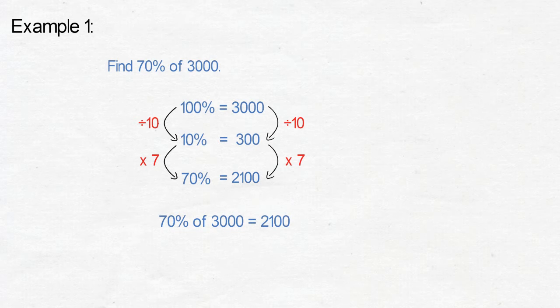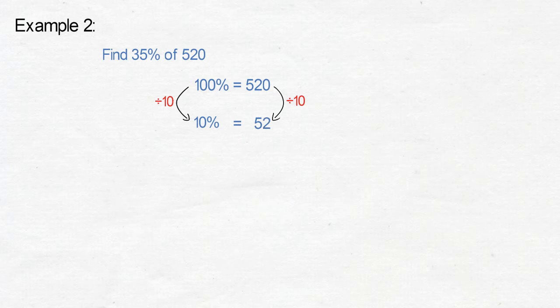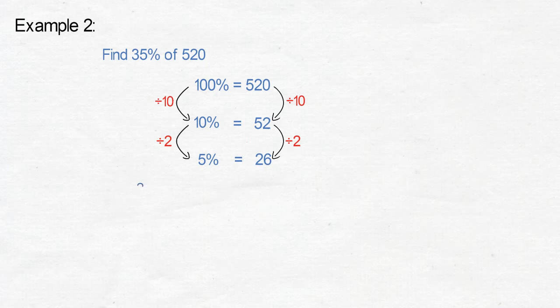Example two: find thirty-five percent of five hundred and twenty. One hundred percent equals five hundred and twenty. We work out ten percent by dividing five hundred and twenty by ten, which gives us fifty-two. To find five percent, we divide fifty-two by two, which equals twenty-six. Thirty percent equals three times ten percent, which equals three times fifty-two, which is one hundred and fifty-six.